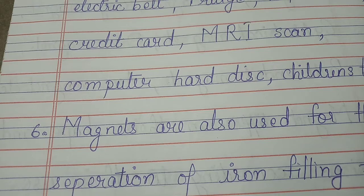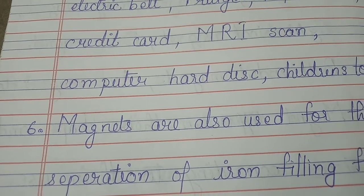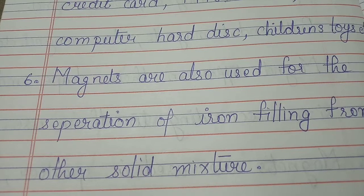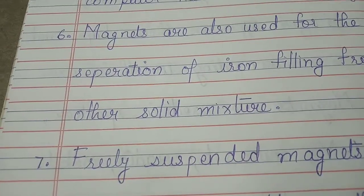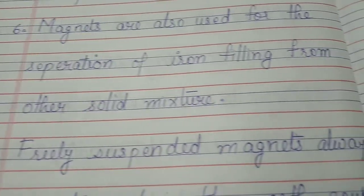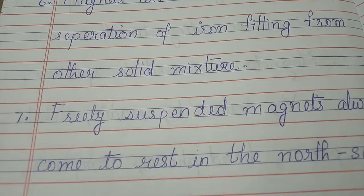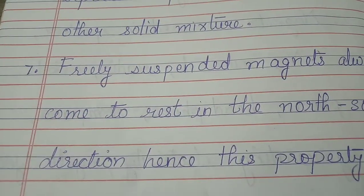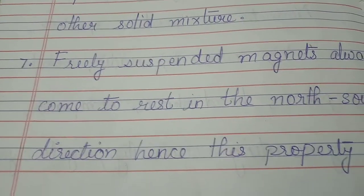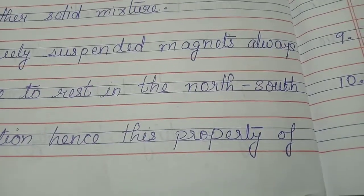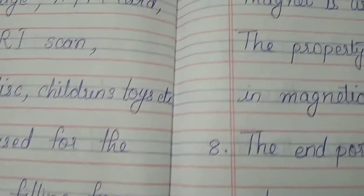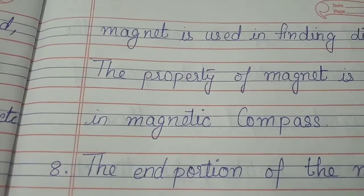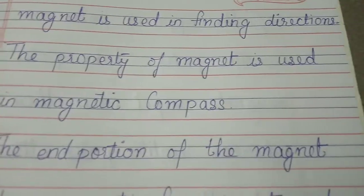Magnets are also used for separation of iron filings from other solid mixtures. Freely suspended magnets always come to rest in the north-south direction. Hence, this property of magnet is used in finding directions.